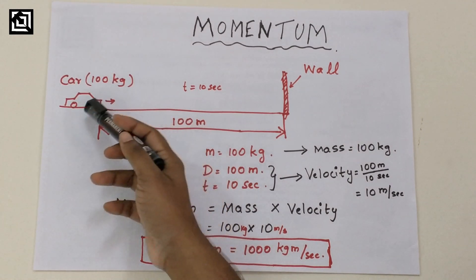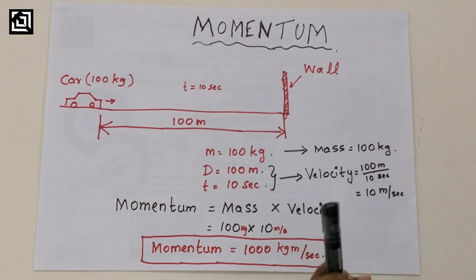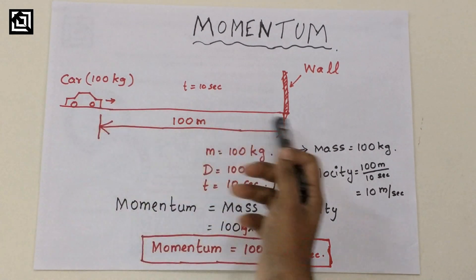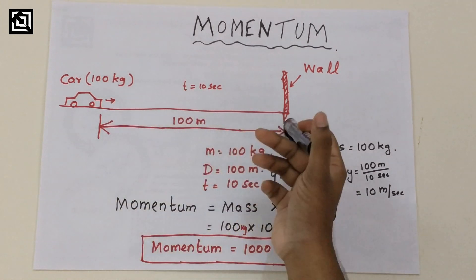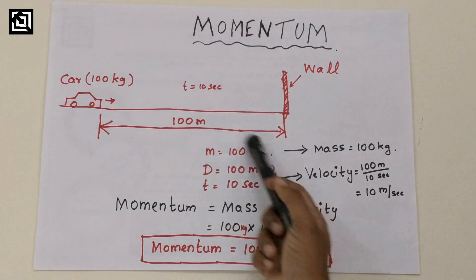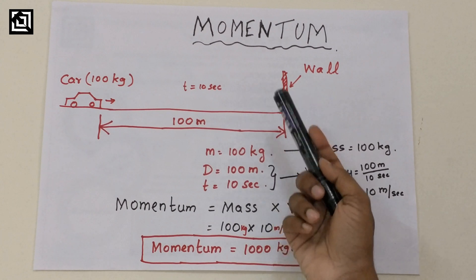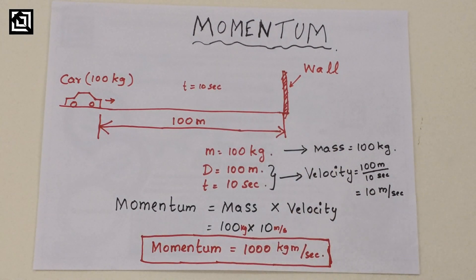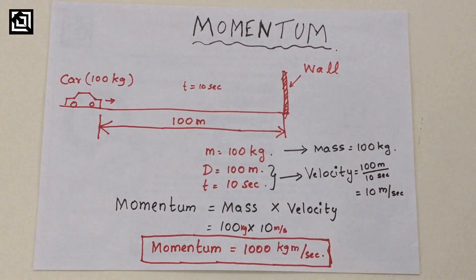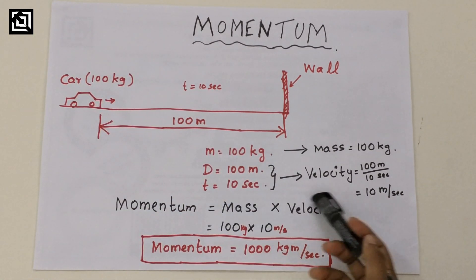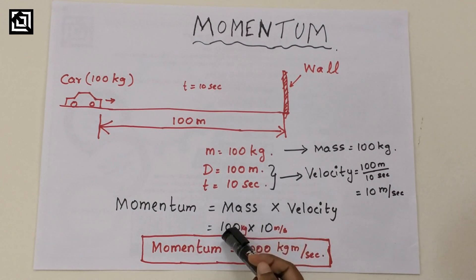A particular object with a particular mass travelling at a particular velocity adds a huge impact — it creates a momentum. This is a car of mass 100 kg. The distance of the car is 100 meters and the time is 10 seconds. The velocity is distance by time, that is 100 meters divided by 10 seconds, giving a velocity of 10 meters per second. The momentum is mass into velocity: 100 kg into 10 meters per second.